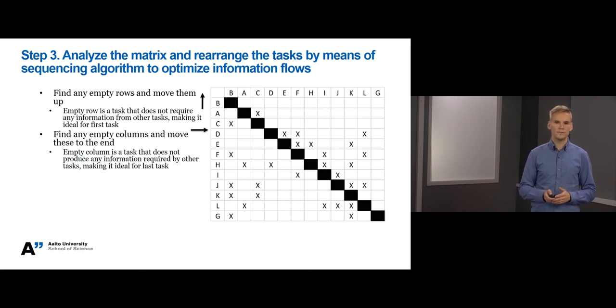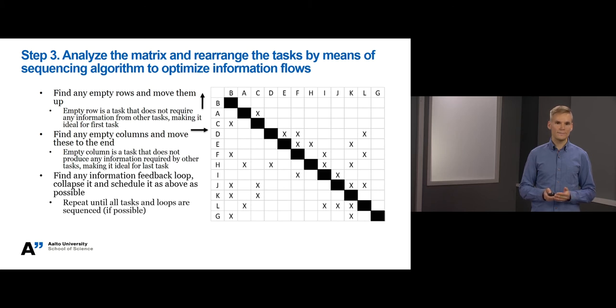So how do we achieve this? Well, first, we try to identify any information feedback loops between tasks. Then we move these tasks that cause information feedback loops as upfront as possible in the matrix to eliminate or minimize information feedback loops. We repeat this until all tasks and loops are sequenced if possible. So in practice, this is kind of an iteration exercise. Let's do this together. First, we can identify that task C requires information from task B and provides information for task A. In turn, task A is dependent on the information from task C, but task A doesn't produce information to task C. So we should move task C up before task A.